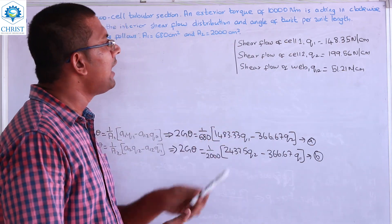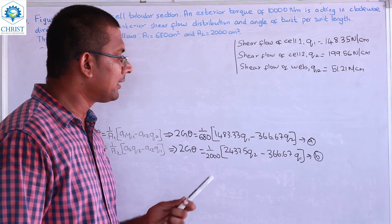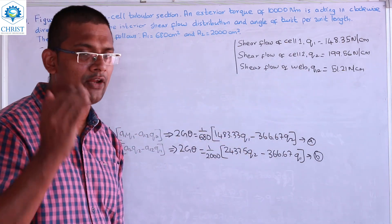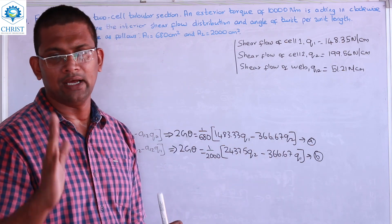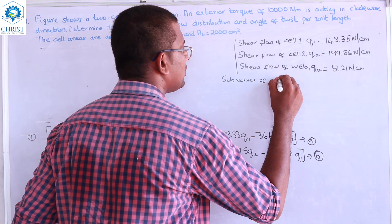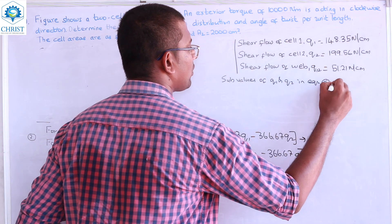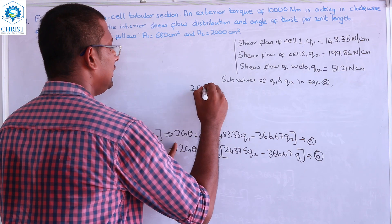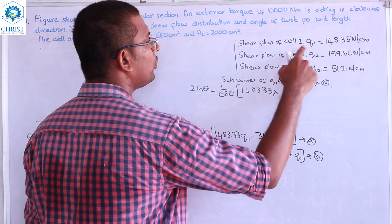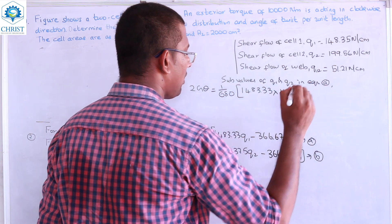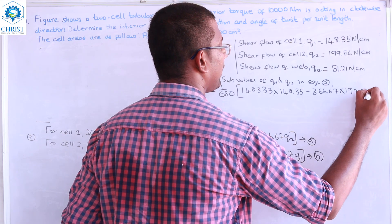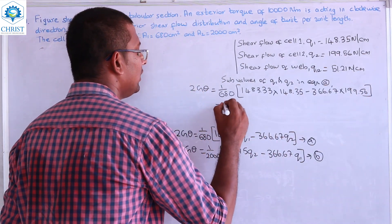For the angle of twist per unit length, substitute Q1 and Q2 into equation A: 2G·θ equals (1/680) × [1483.33 × 148.35 minus 366.67 × 199.56]. Solving this gives 2G·θ equal to 216, so θ equals 108/G radians per centimeter.